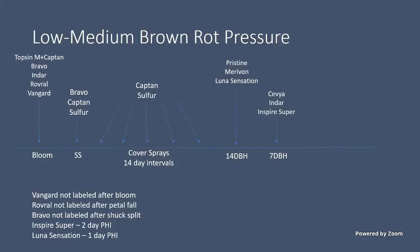We want to get at least one good bloom spray. Shuck split is a critical time for scab control as well, so I really like to spray Bravo during shuck split — if starting from scratch, that's the first thing I'd write down and then build the program after that. Captan is almost the industry standard for cover sprays during the summer. Then once we get into two weeks before harvest — 14 days and 7 days out — that's when we start rotating in some of the other fungicides. The 14-day applications are all Group 7-11s and are probably the best option we have for brown rot control.